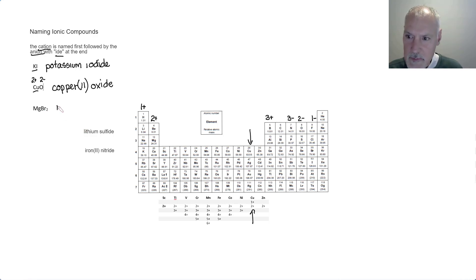Next one down, we have magnesium combining with bromine, so it would become magnesium bromide.